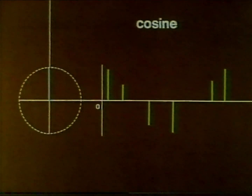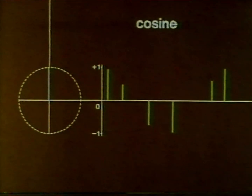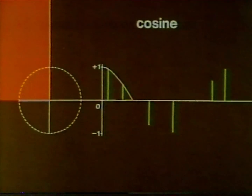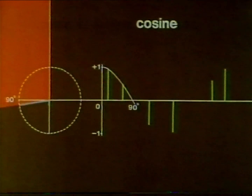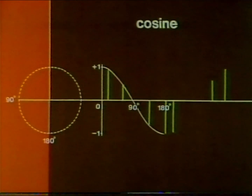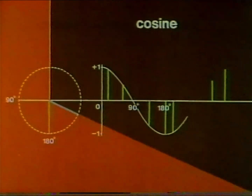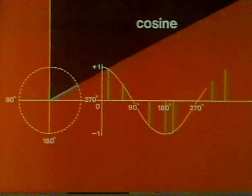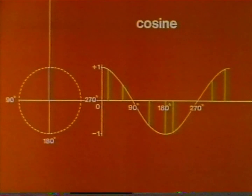A vertical axis and a scale. The cosine of 90 degrees is zero. Cosine 180 degrees is minus one. Cosine 270 degrees is zero. And the cosine of 360 degrees is one.